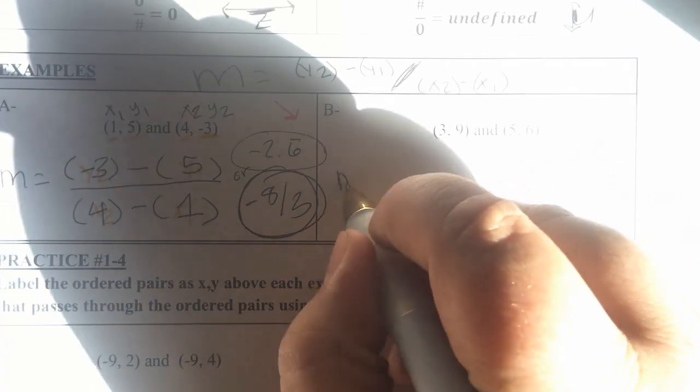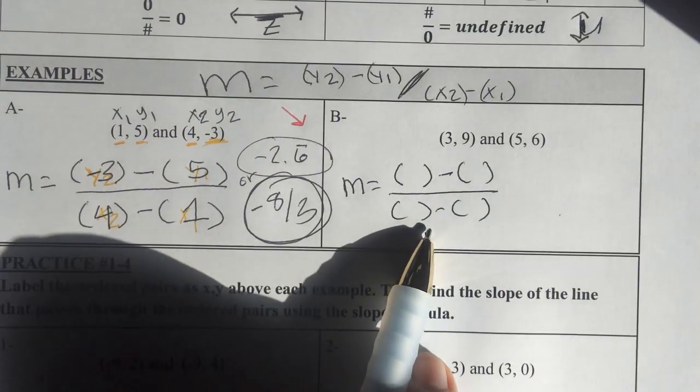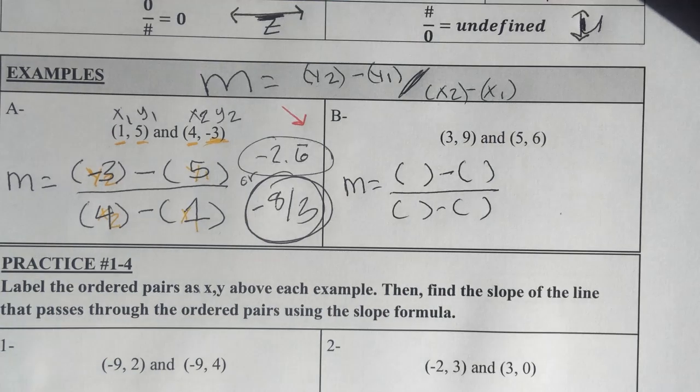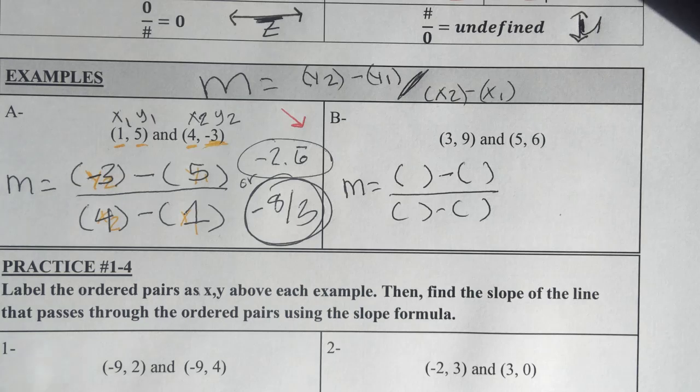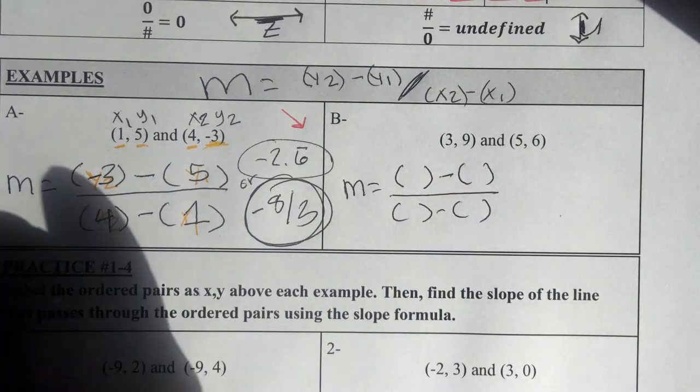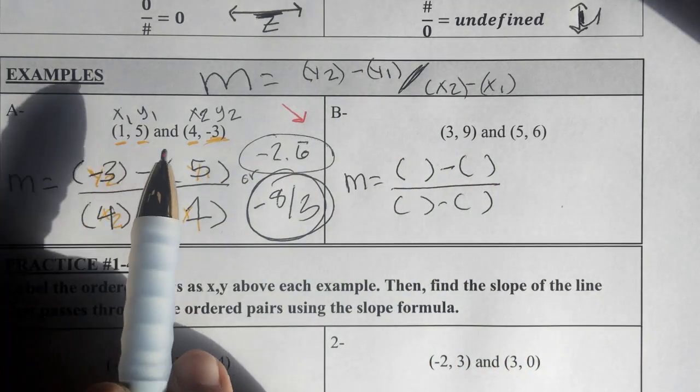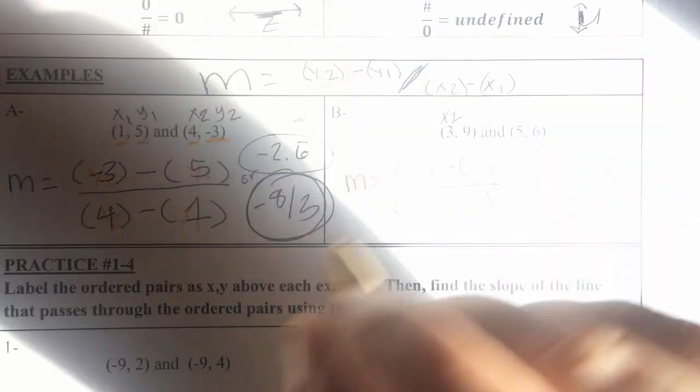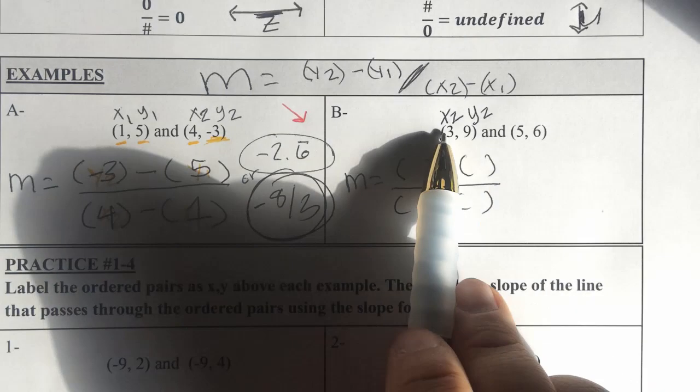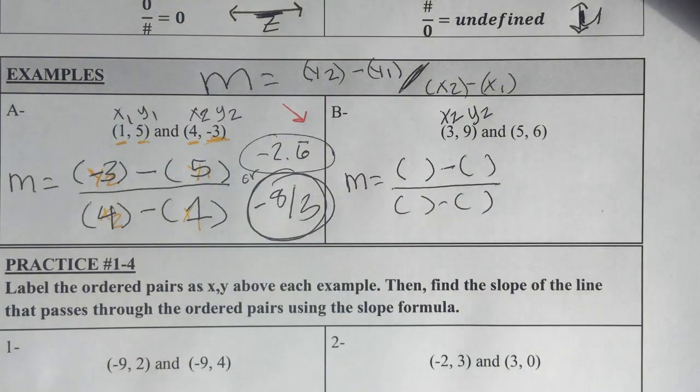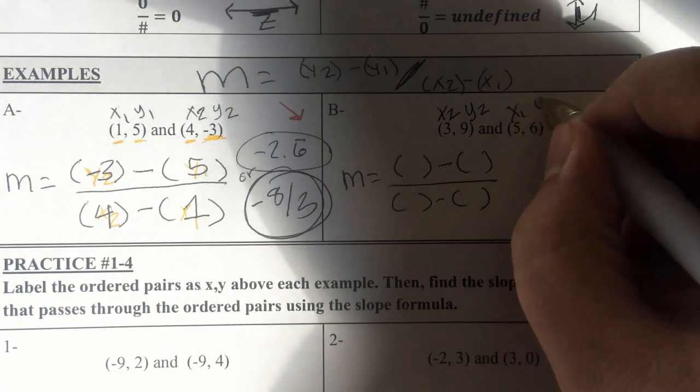So I'm going to rewrite the formula, m equals bubble minus bubble over bubble minus bubble. And in those bubbles, I'm just looking to replace them with the y and x values, which I get from the two ordered pairs. I'm going to need to label those two ordered pairs so I know where to put what. And I do want to show you, it doesn't matter how you label, as long as we're consistent. And by consistent, I mean if I say that 3 is x2, then 9 has to be y2. The subscripts by x and y have to match in the same ordered pair.